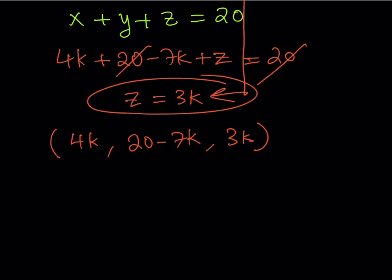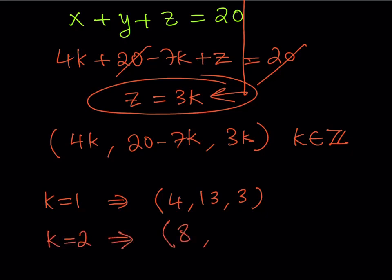Again, we're looking for positive integer solutions. This is the general solution where k is an integer. This should generate infinitely many ordered triples. But if you're looking for positive solutions, you've got to make sure that all your k values make everything positive. For example, k = 1 is valid because if you use k = 1, you get (4, 13, 3). That's one of the positive ordered triples. If you use k = 2, it's also going to work. You would be getting (8, 6, 6).